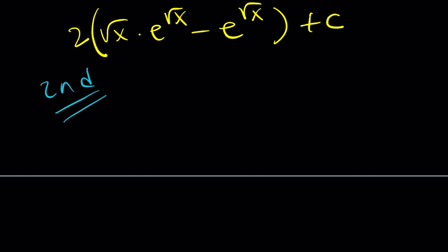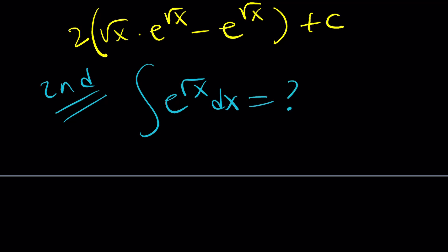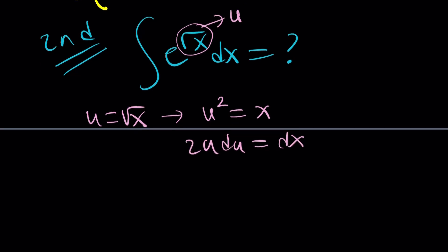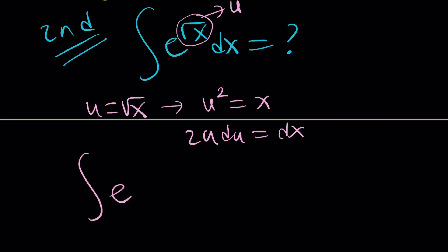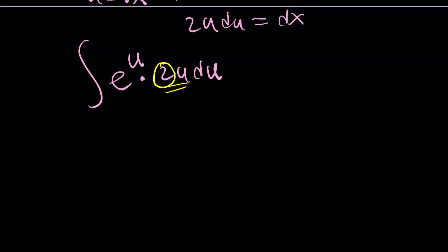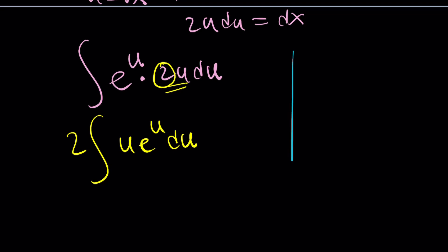Now let's look at the second method, which uses a different u substitution and is more direct. This time, let u equal square root of x. Then u squared equals x, and differentiating both sides gives 2u du equals dx. So we replace square root of x with u and dx with 2u du. The integral becomes 2 times the integral of u e to the u du.